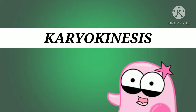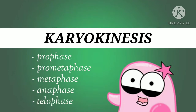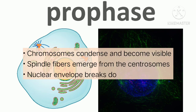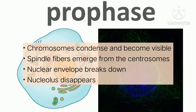Karyokinesis, also known as mitosis, is divided into a series of phases: prophase, pro-metaphase, metaphase, anaphase, and telophase. During prophase, the nuclear envelope starts to dissociate into small vesicles, and membranous organelles such as the Golgi apparatus and endoplasmic reticulum fragment and disperse toward the periphery of the cell. The nucleolus disappears and the centrosomes begin to move to opposite poles of the cell. Microtubules extend between the centrosomes, pushing them farther apart. The sister chromatids begin to coil more tightly with the aid of condensin proteins and become visible under a light microscope.